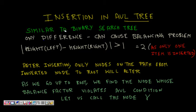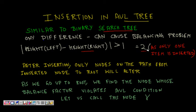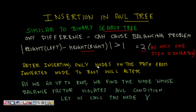Insertion is very much similar to a binary search tree because it is of course a binary search tree, but the only difference is that when you insert a node it can cause a balancing problem. The height of the left subtree minus the height of the right subtree can become two — greater than one. It will at most become two because you are only inserting one item at a time.